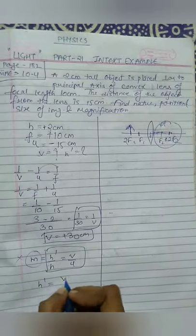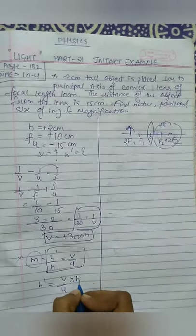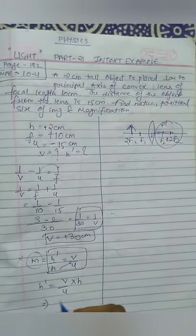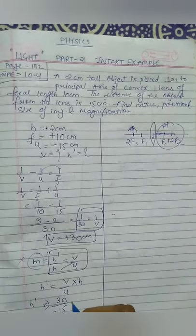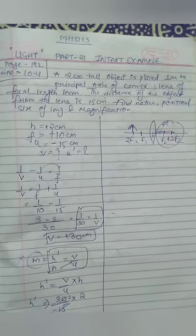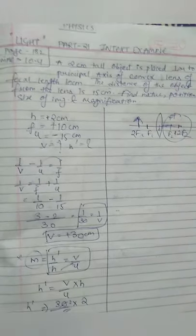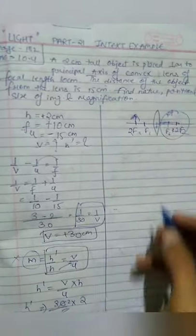So h', we have to find: v by u into h. So h', what is the value of v? We have 30, this is minus 15, and this is 2. So we get minus 4. So here we have image height which is minus.